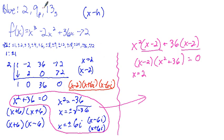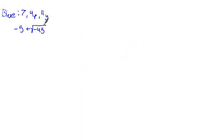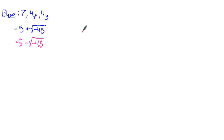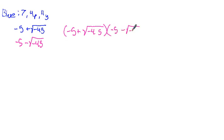So that was number 2 on the blue, 9 on the pink, 13 on the yellow. Hopefully that cleared that up. Now we move on to 7 on the blue, 4 pink, 11 on the yellow. It gave us this complex number. We know it's complex because it's the square root of a negative — that's imaginary. When you have an imaginary part to your number, it's a complex number. It says find the conjugate. The conjugate is like the easy part: you just take the sign in the middle and change it. Negative 5 minus the square root of negative 45. That's it.